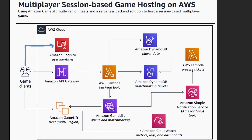Amazon Cognito is the native AWS authentication provider. You can also incorporate it with things like Google Social Sign-On or Facebook Social Sign-On, any of those other identity providers — this just allows us to ensure that the user is authenticated with a backend system. From there, the next thing that the user needs to do is call a backend API. In this case, it's an API Gateway to make a matchmaking request.